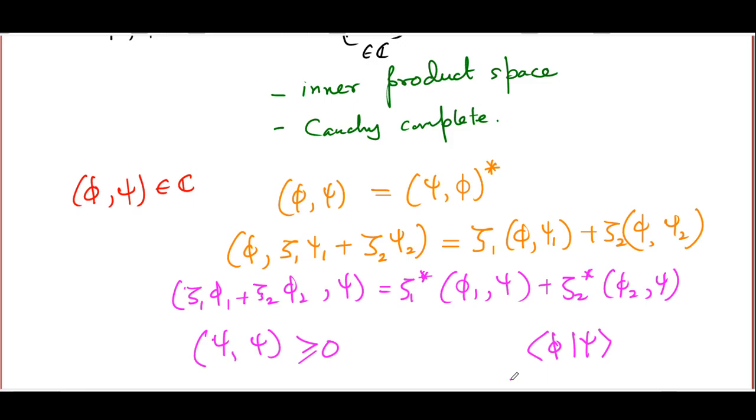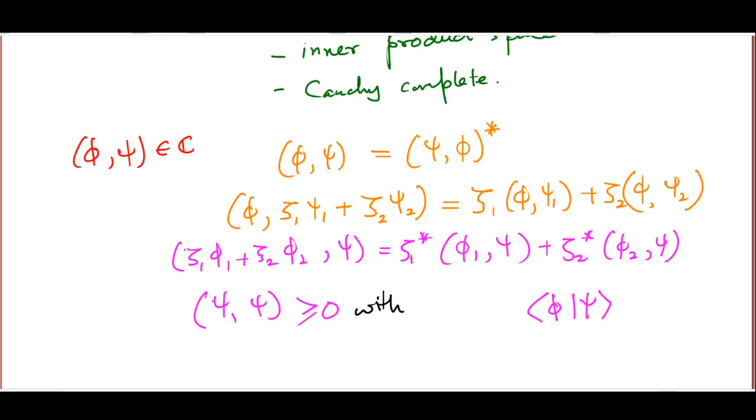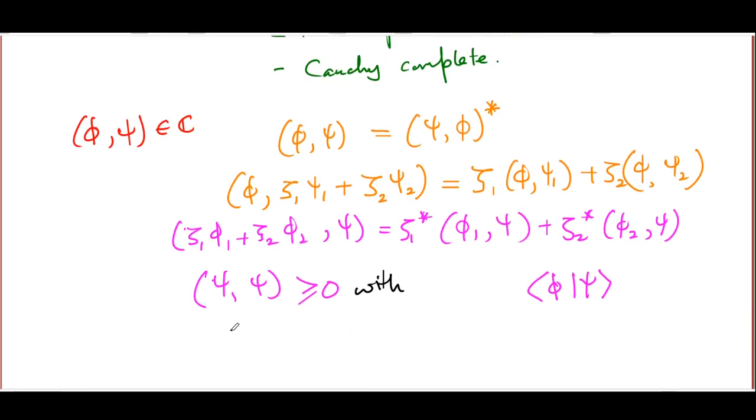And there is one very important addendum to this last property that I wrote down. So not only is the inner product of chi with itself greater than or equal to 0, the only way in which it can be equal to 0 is if chi, the vector itself, is a null vector. So that completes the basic properties of the inner product.